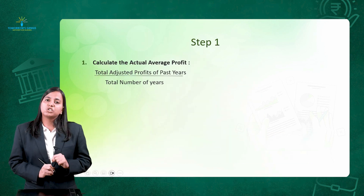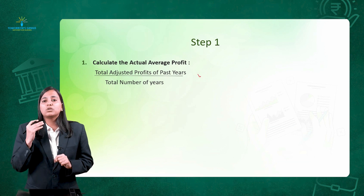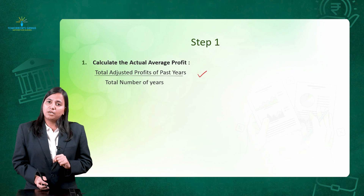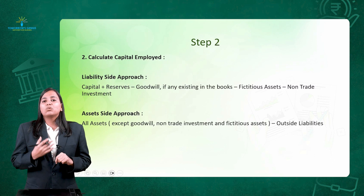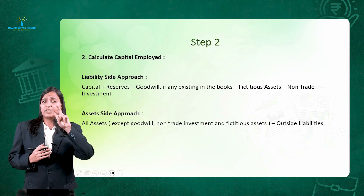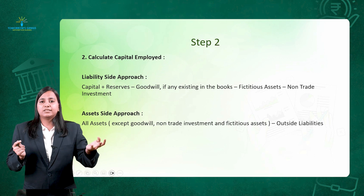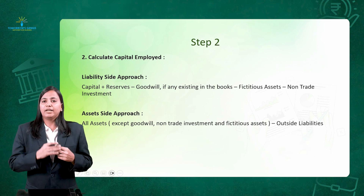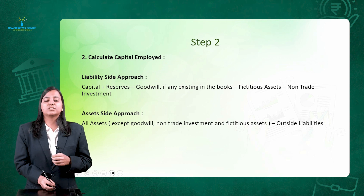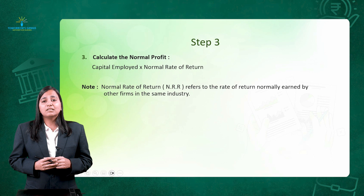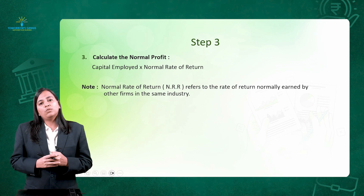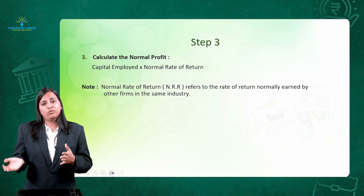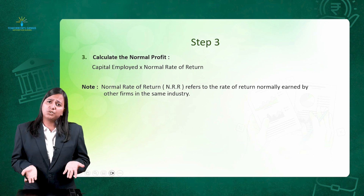Let's revise the steps from the super profit method. Step 1 is calculation of average profit, which is total adjusted profit in the past years divided by number of years. Step 2 is calculating capital employed — there are two methods: the liability approach or the asset approach; you can use whichever you prefer. Step 3 is calculation of normal profit, using the formula: capital employed multiplied by normal rate of return (NRR), which is given to you in the question.